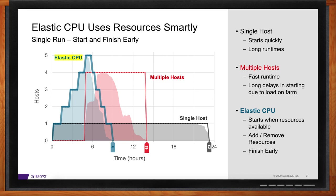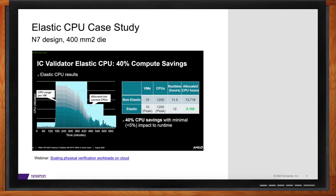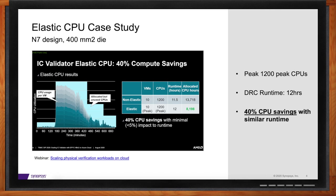Let me show you an example from a customer design we worked with recently. Customers are seeing up to 40 percent resource savings with Elastic CPU on 7nm and 5nm designs. We have data from a 400 square millimeter design at 7nm technology. With a static pool of 1,200 CPUs, the customer finished the sign-off run in about 12 hours. Using ICV Elastic CPU with the same setup, the tool completed the job in about the same runtime — 12 hours — but with a significant reduction in CPU hours, down from 13,700 with the static pool to about 8,200 with Elastic. That's a 40 percent reduction, saving on both compute and total productivity.